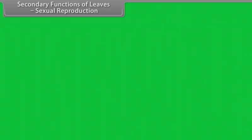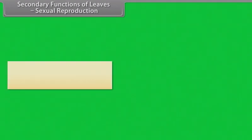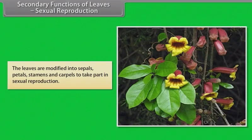Sexual reproduction: The leaves are modified into sepals, petals, stamens and carpels to take part in sexual reproduction in Carica papaya.